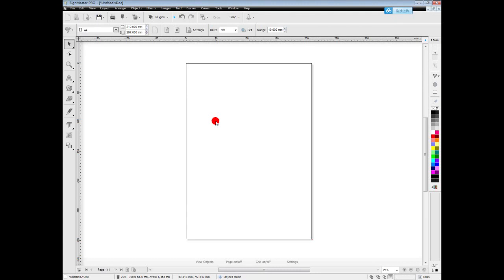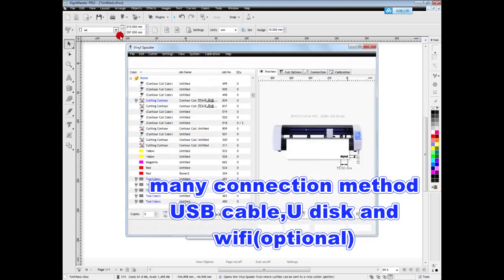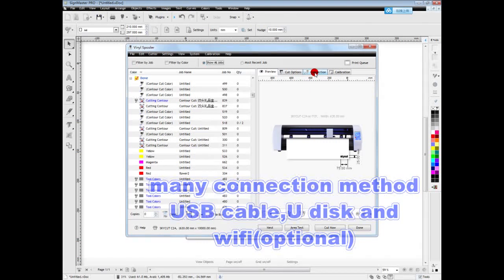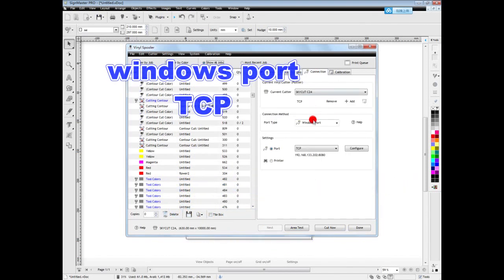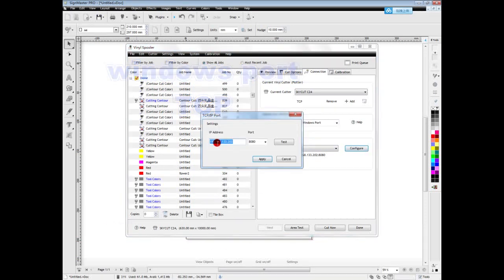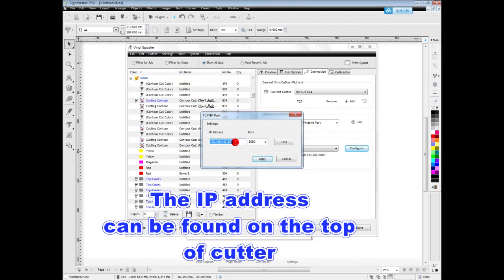Firstly, let's set the connecting method. Skycut cutter has many connecting methods. Let's use WiFi to connect. Choose Windows port and TCP, and input the IP address here.